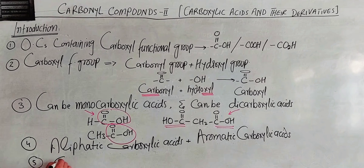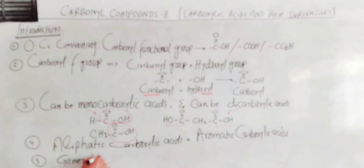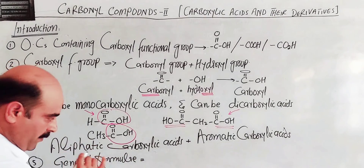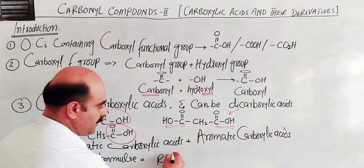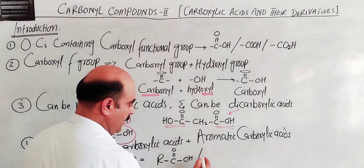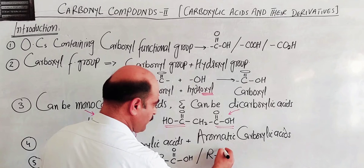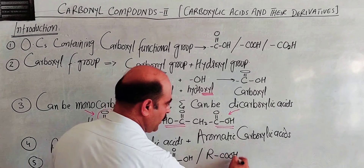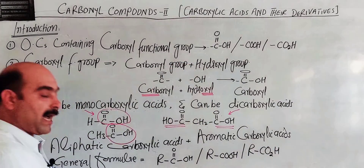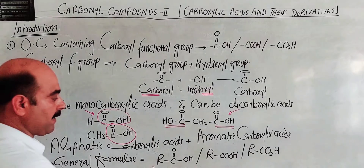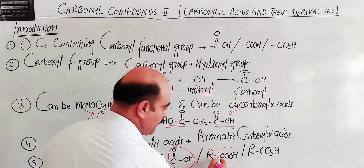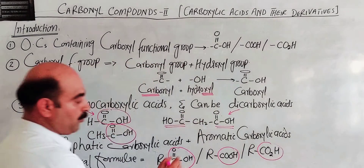For aliphatic carboxylic acids, the general formula is R-COOH, where R is an alkyl group — an aliphatic open chain. The carboxyl group is C=O plus O-H. For aromatic carboxylic acids, the general formula is Ar-COOH, where Ar is the aromatic group attached to the carboxyl group C=O-OH.